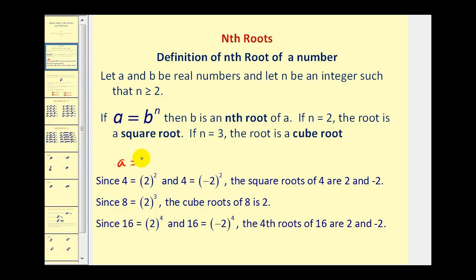If we have equations in the form of a equals b to the power of n, as we see here: four equals two squared, and four equals negative two squared, then the square roots of four are two and negative two. And since eight equals two to the power of three, now n is three, so we have the cube root of eight is two. And since 16 is equal to two to the power of four, and 16 is equal to negative two to the power of four, the fourth roots of 16 are two and negative two.